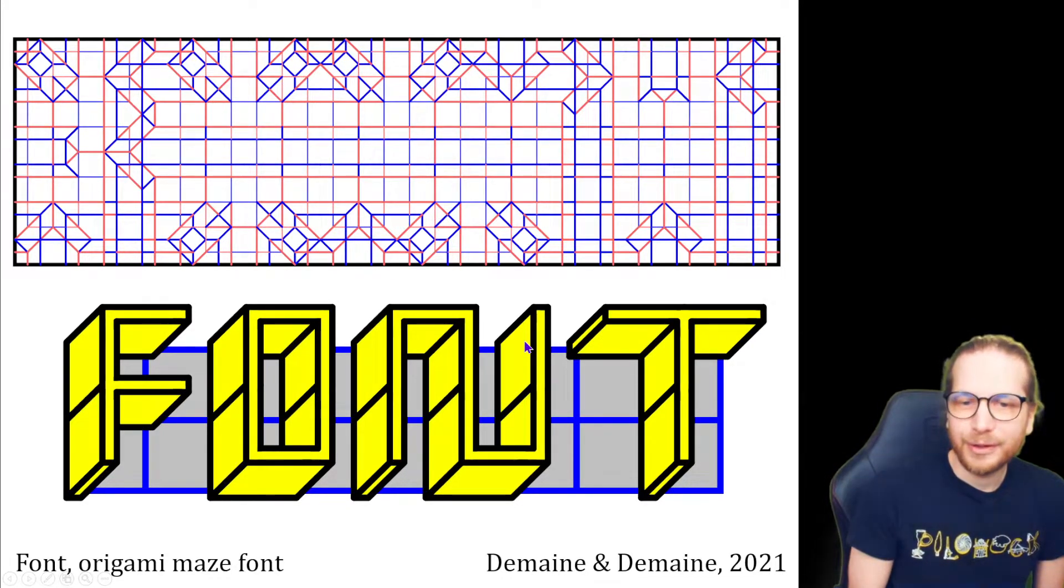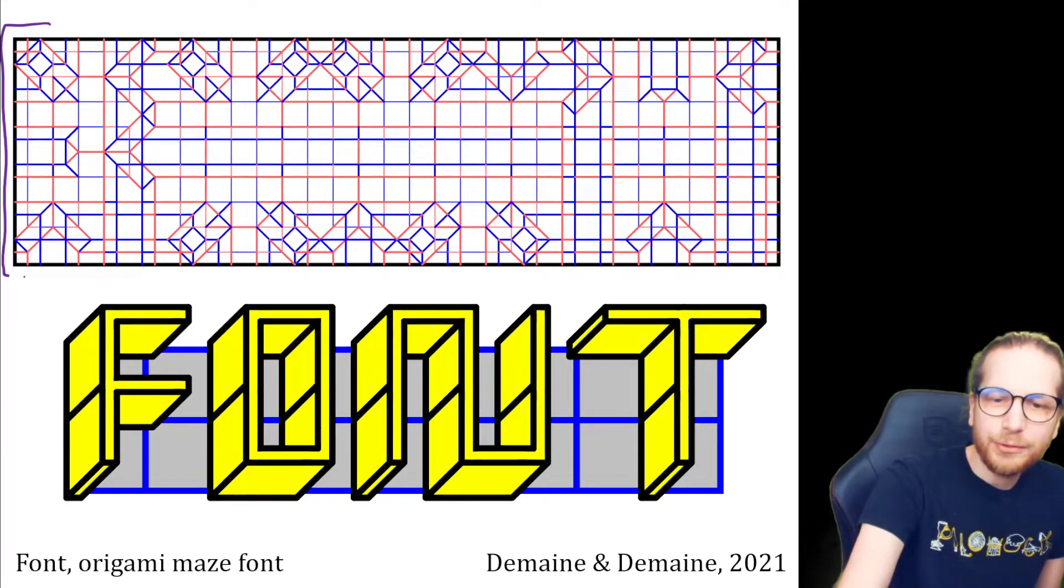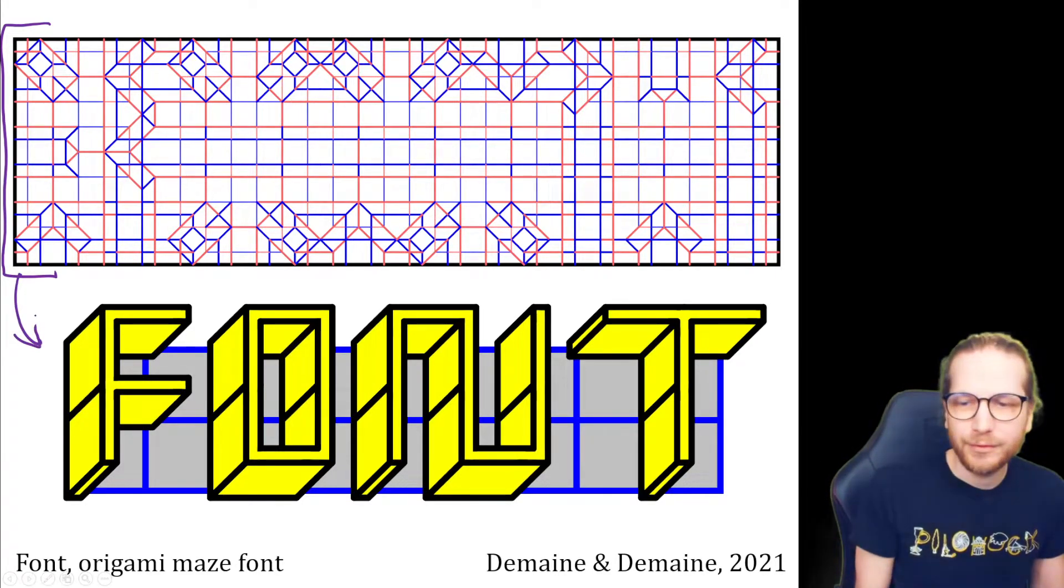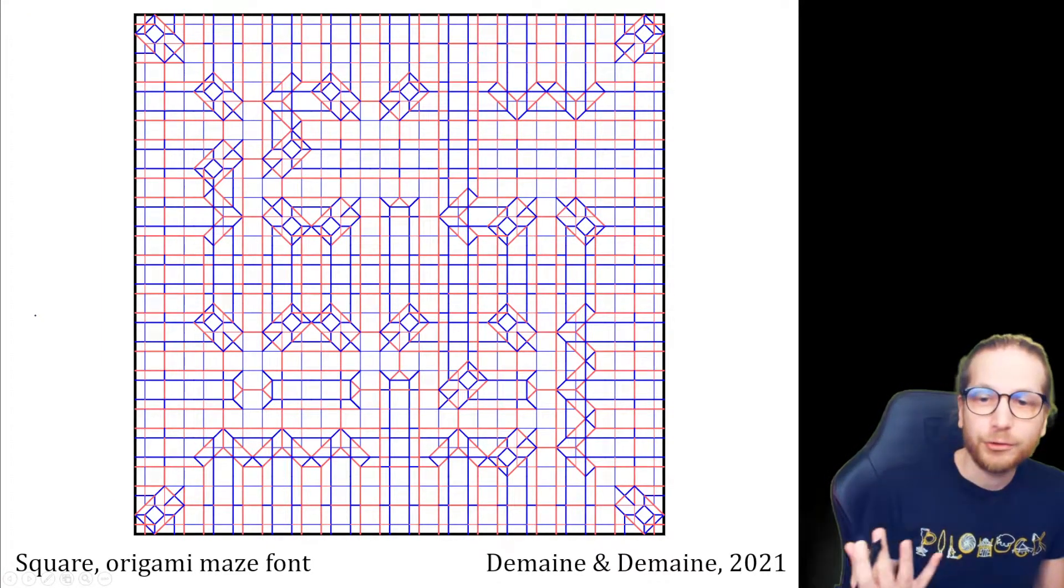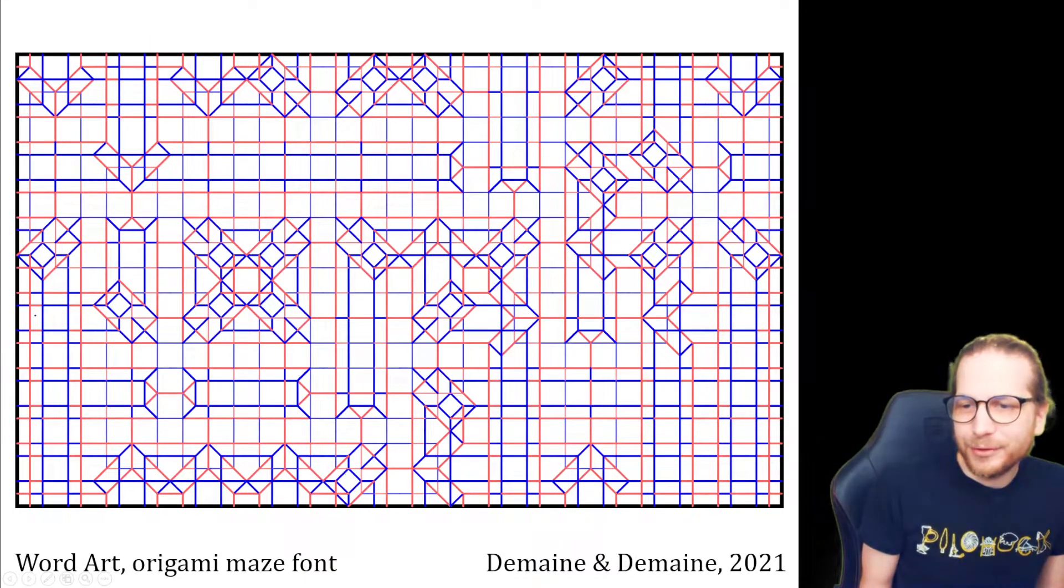So this is what's called the Origami Maze font, one of the first fonts we designed where it generates a crease pattern, which folds into a 3D structure of the letters. So here is an example of a crease pattern on a square piece of paper, that if you fold it, itself makes a square outline and the word square in the middle.